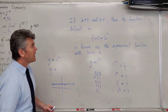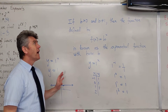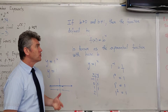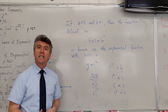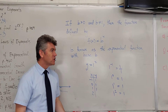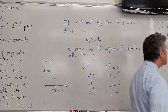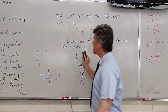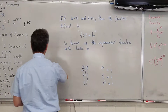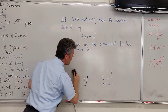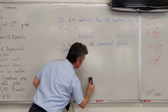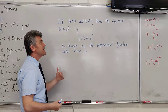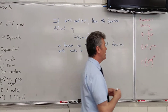Now, the exponential functions themselves are divided into two types. Functions that represent exponential growth and functions that represent exponential decrease. We're going to take a look at what happens when b is between 0 and 1, and what happens when b is greater than 1.